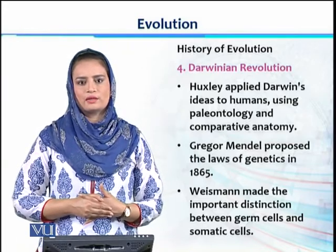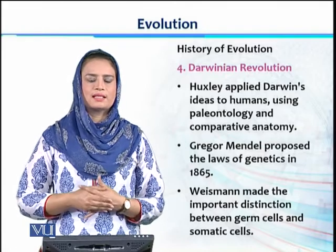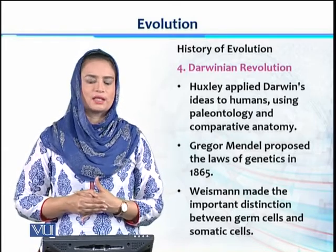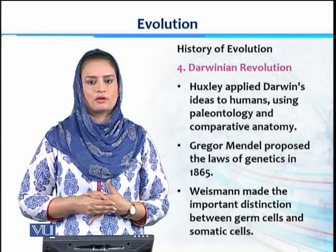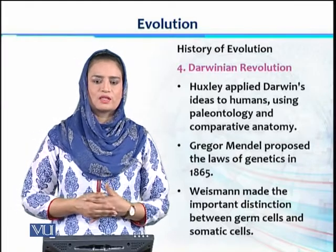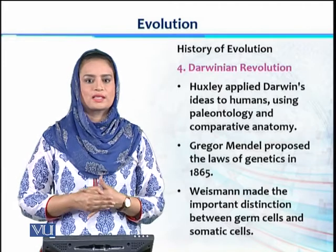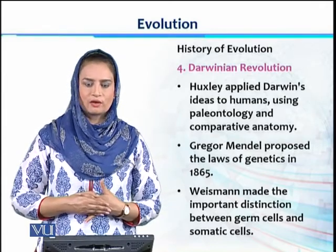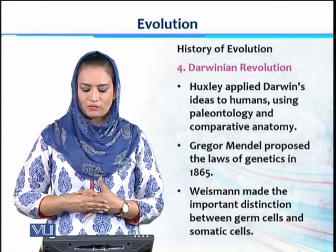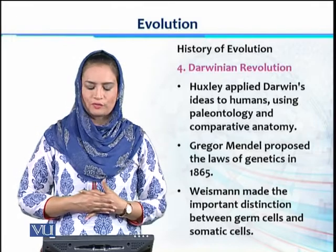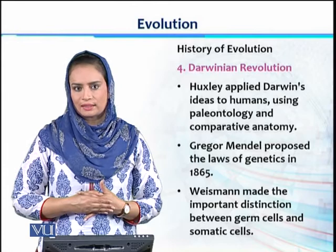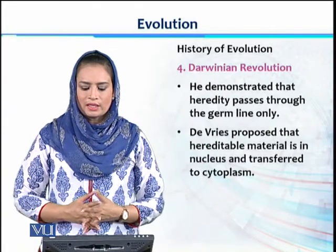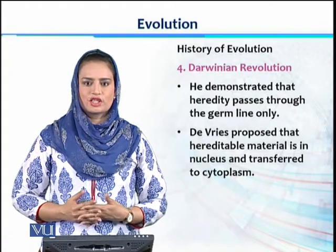Gregor Mendel, considered the father of genetics, proposed his laws of genetics through long experimentation in 1865 — the Law of Segregation and the Law of Independent Assortment. This was a real breakthrough when it was declared that genes are responsible for transferring characteristics from parents to offspring. August Weismann also played an important role, performing a series of experiments proving that germ cells are responsible for transfer of characters, demonstrating that only the germline is responsible for inheritance.